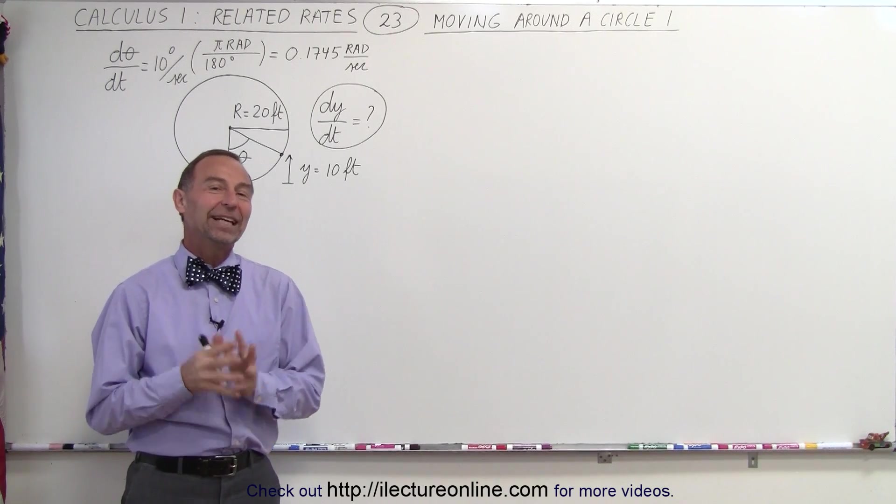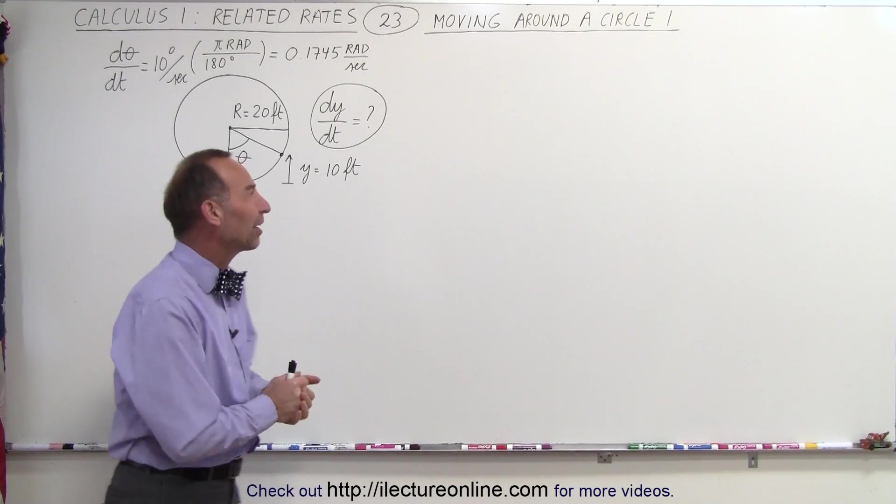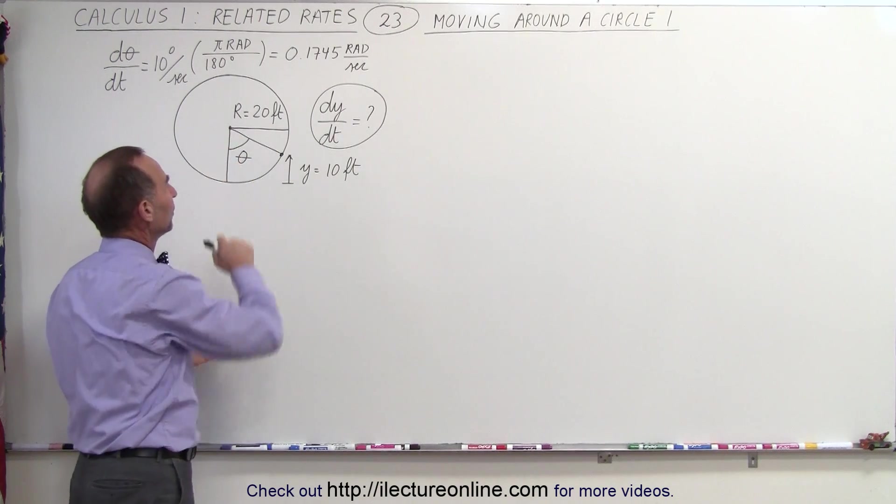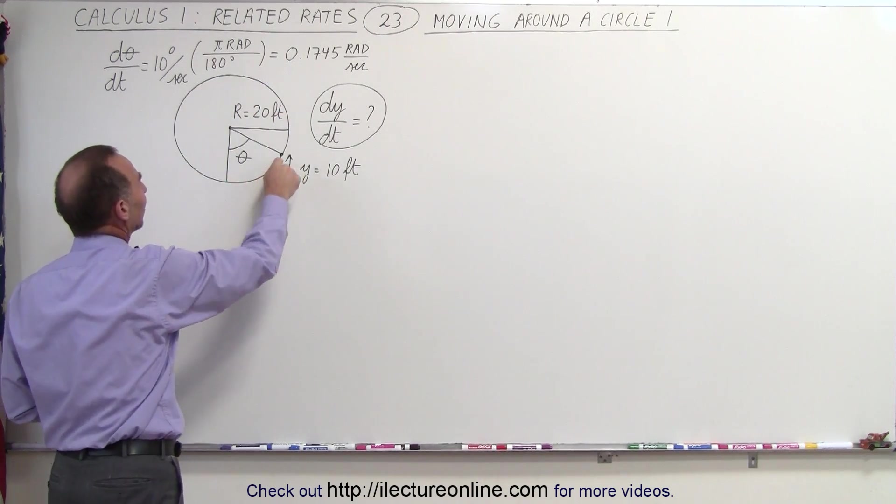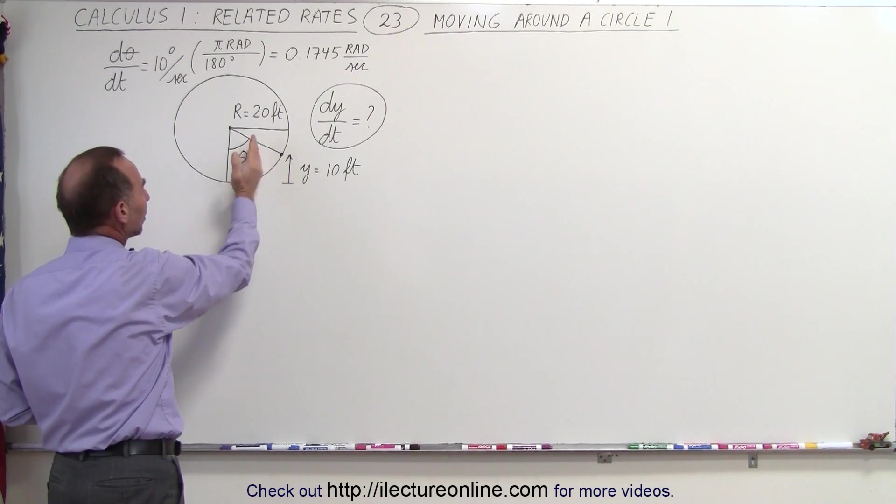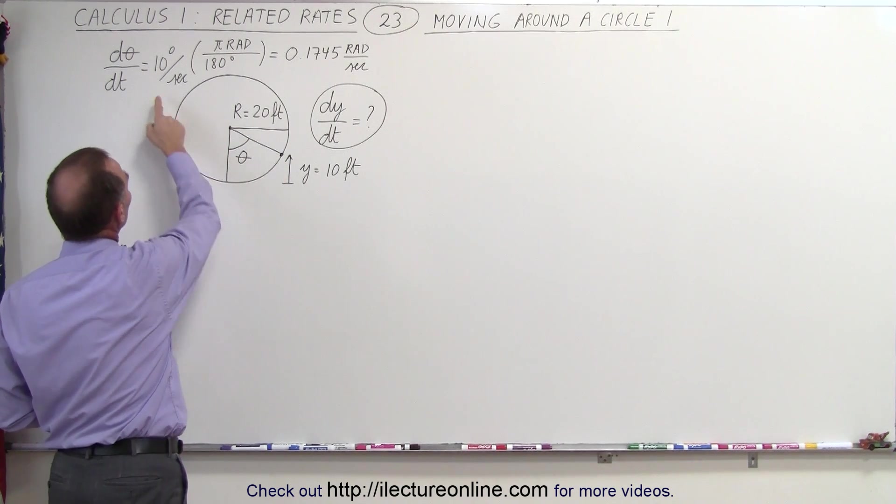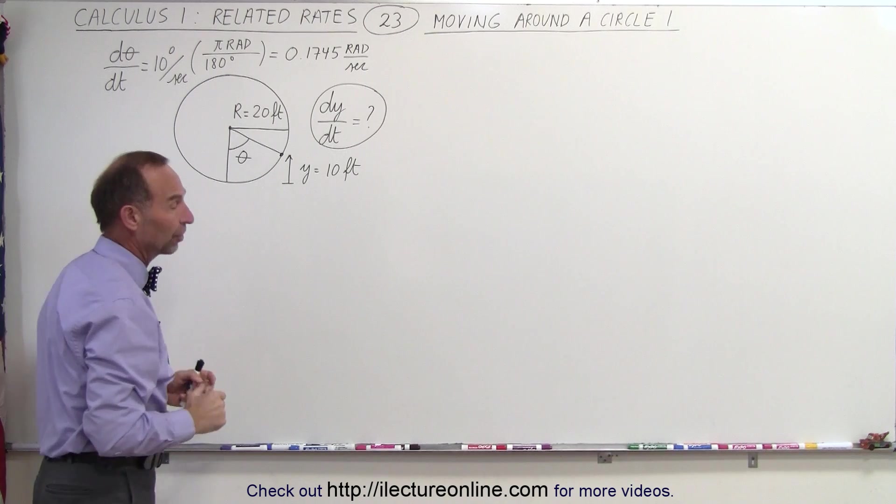Welcome to Electroline. Our next example with related rates has to do with moving around the circle. Notice there's an object or point moving around the circle, and it's moving in such a way that the angle relative to the vertical is changing at 10 degrees per second.